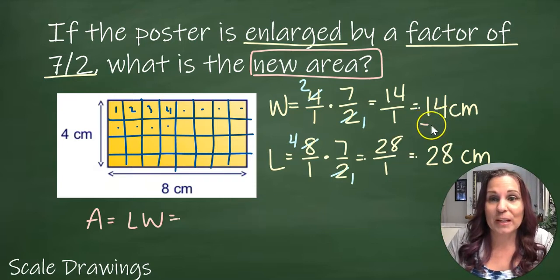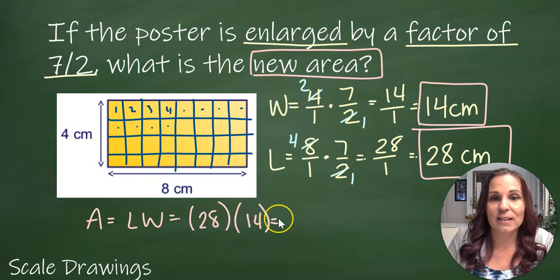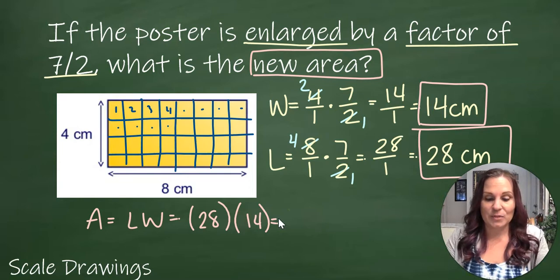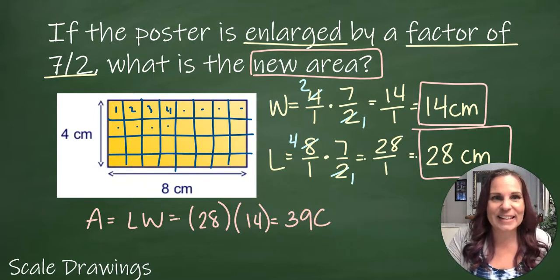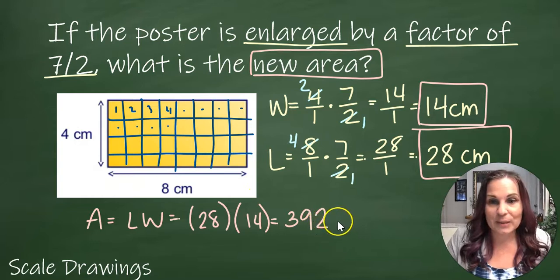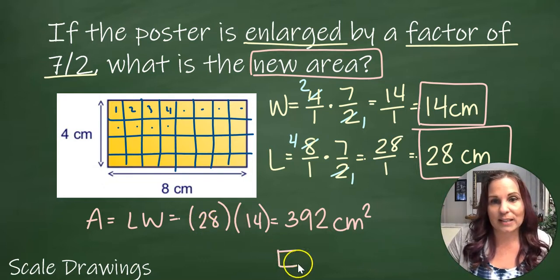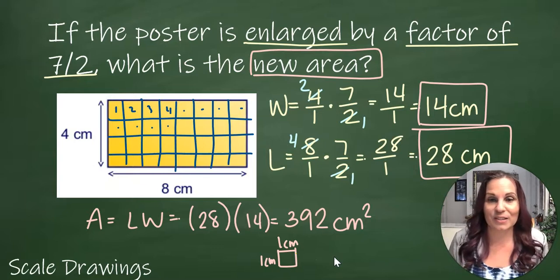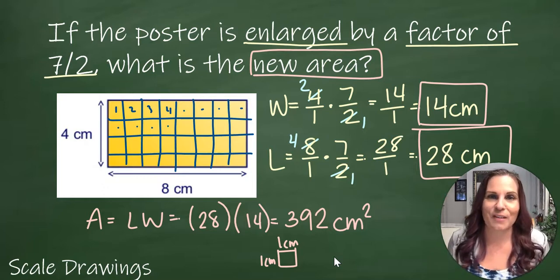So let's go back to the problem. Area is length times width, but I'm going to use my new length and width. That means I'm going to have 28 times 14. Let's see what that is: 28 times 14 is 392. And I'm not just going to put centimeters here because remember, the area is counting squares, so I'm going to put centimeter with a little 2. That means it's a square centimeter—one centimeter on this side, one centimeter on this side. So 392 of those little squares will fit in this rectangle once it's enlarged using a scale factor of 7/2.